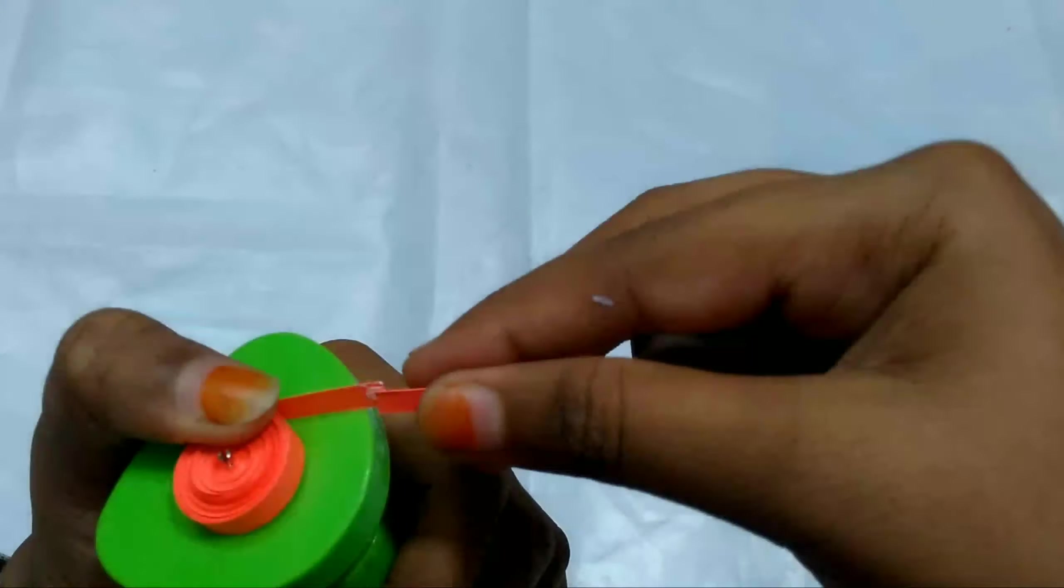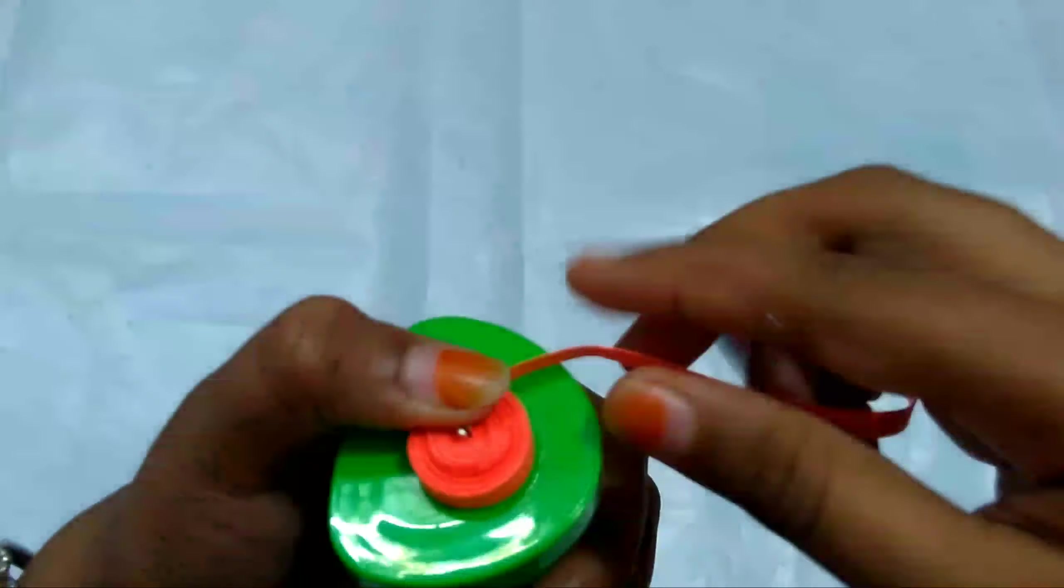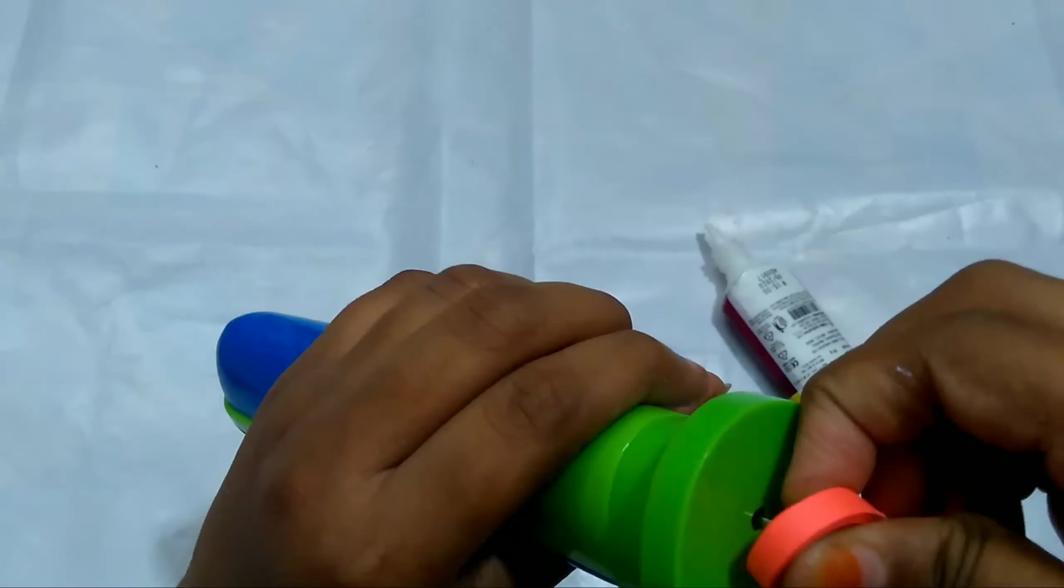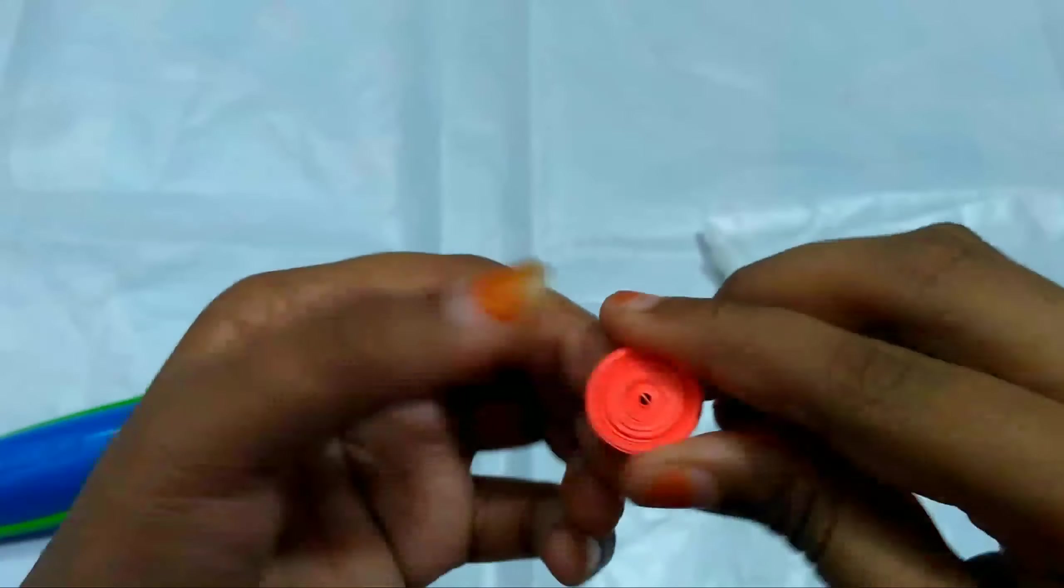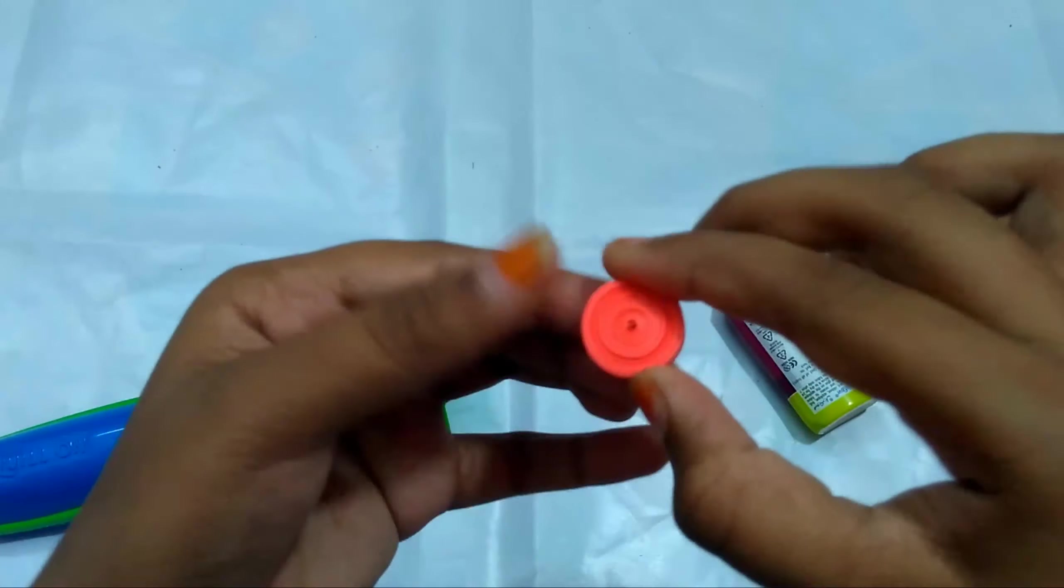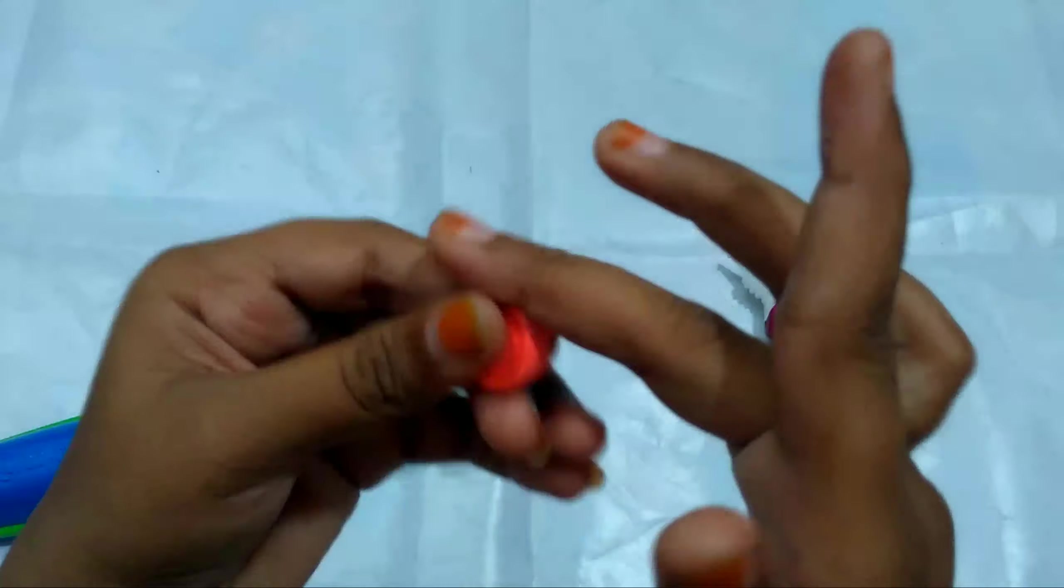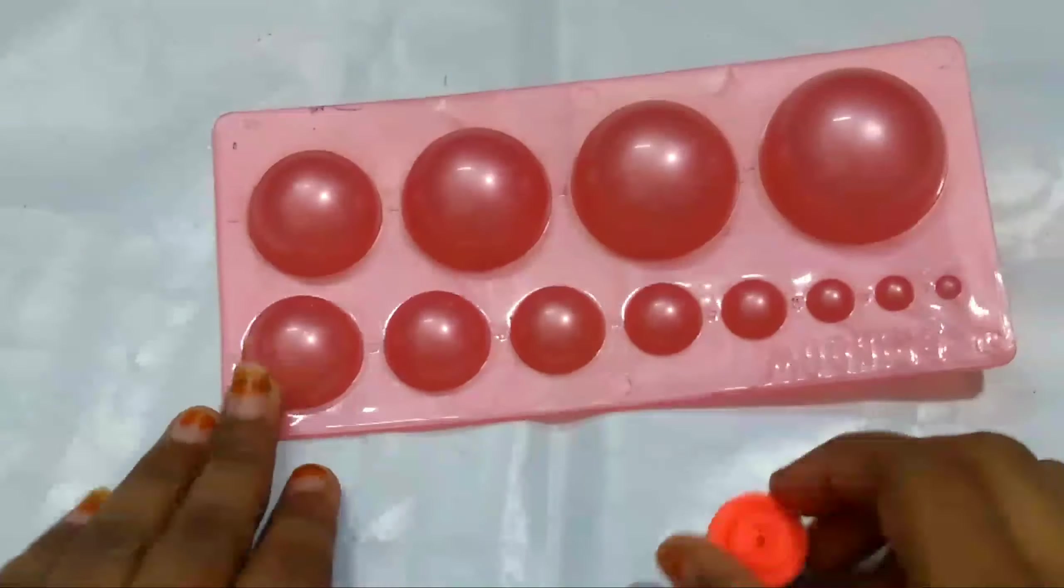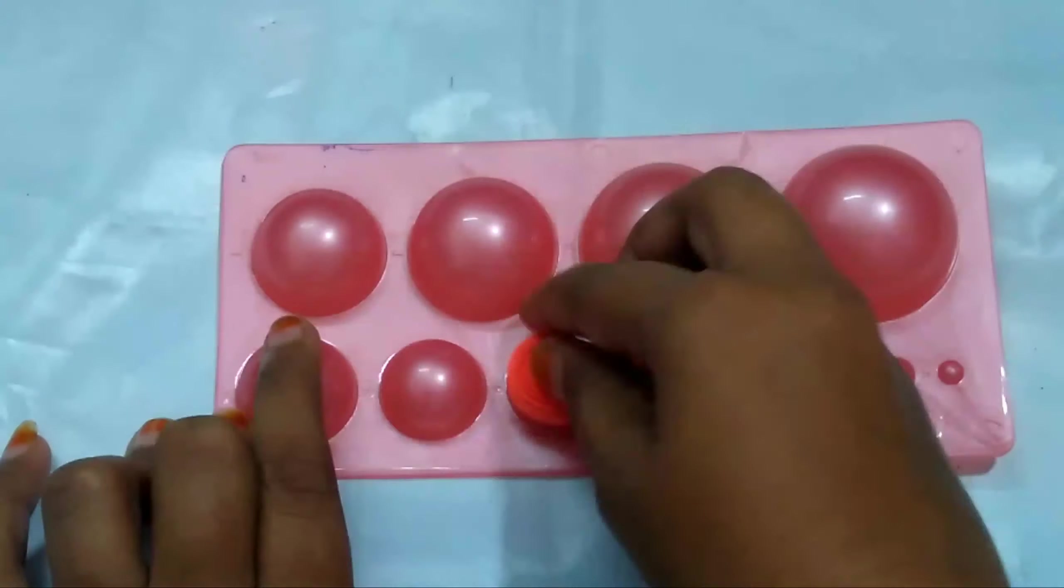I'm adding two strands to this. Now apply glue and attach it. Now take the jhumka base and make a jhumka with this.